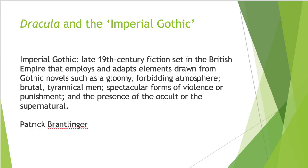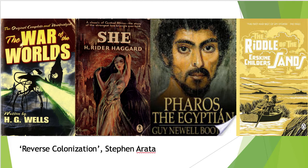As we discussed last week, Dracula is part of a wave of reverse colonization novels — a term taken from Stephen Arata — that were published in the 1880s and 1890s, which depict a foreign and sometimes colonial other turning the processes of empire and colonialism back on England, threatening the English with the same violence and tyranny that the empire had enacted on so many other nations throughout the 19th century.